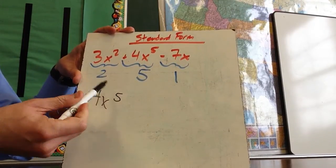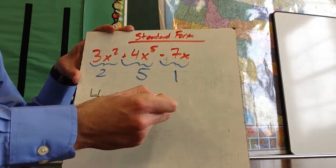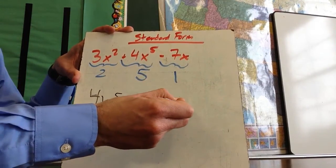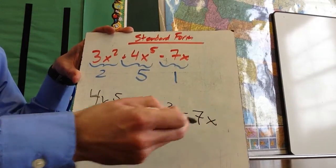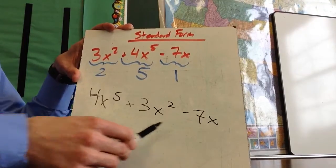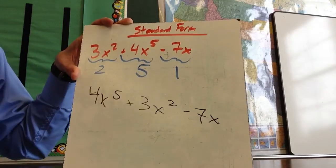So this is going to be a positive 4x to the fifth, then this is the second, so plus 3x squared, because the 3 is positive, and then this is negative, so it's minus 7x. So it's going 5, 2, 1. You're putting them in order from greatest power to least power, being careful of the signs.